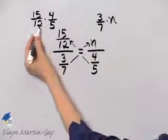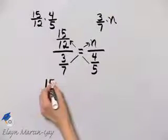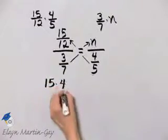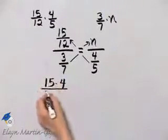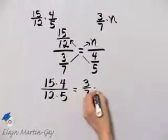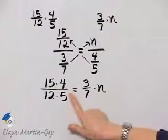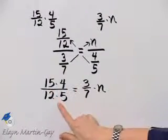Now we are multiplying, so let's go ahead and start. This is going to be 15 times 4 over 12 times 5 equals 3 sevenths times n. Let's take a moment before we go any further and simplify this a little bit.